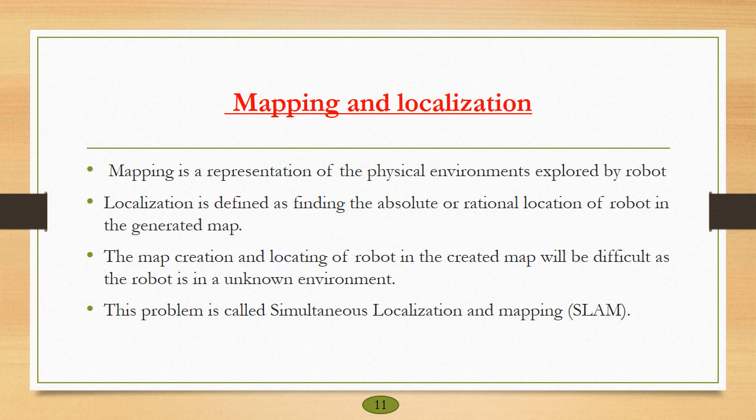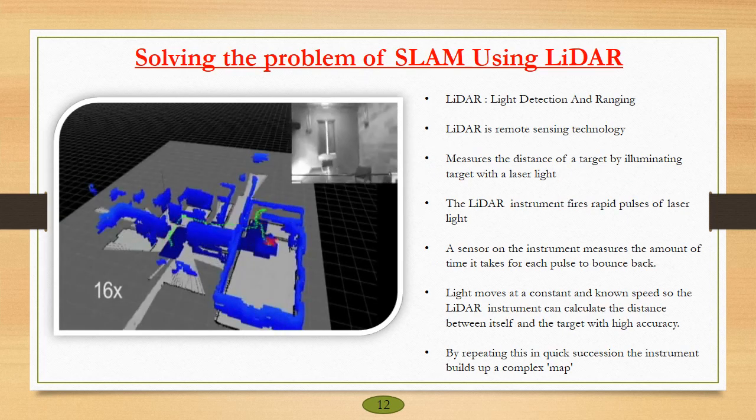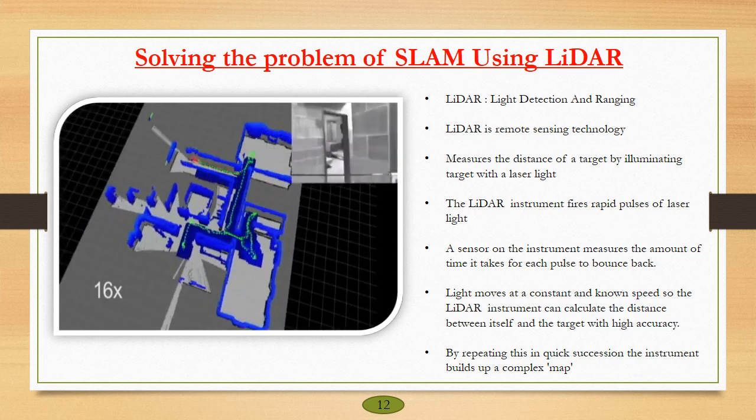Mapping and localization actually plays a key role in determining the stability of a swarm robotic system. Mapping is actually the representation of the physical environment explored by a robot. Localization is defined as finding the absolute position of the robot in the previously defined map. Actually, mapping and localization is a complex process and this problem is called SLAM: simultaneous localization and mapping. For solving the problem of SLAM, we use LIDAR. The full form of LIDAR is light detection and ranging. LIDAR is actually a remote sensing technology.